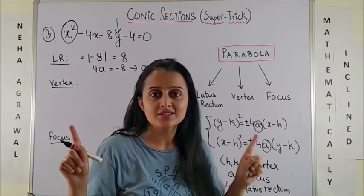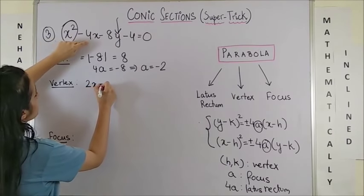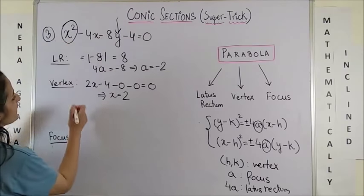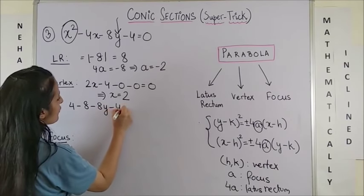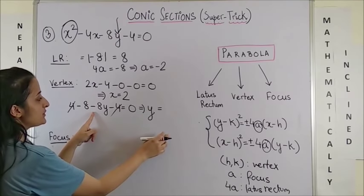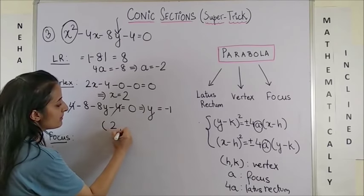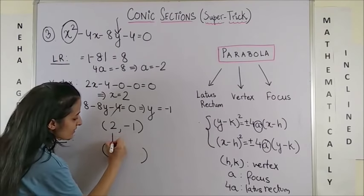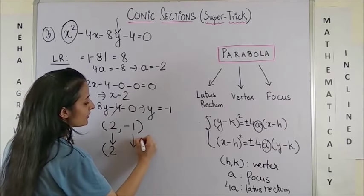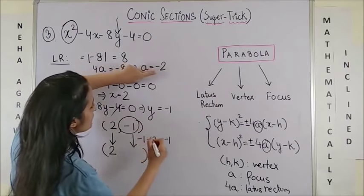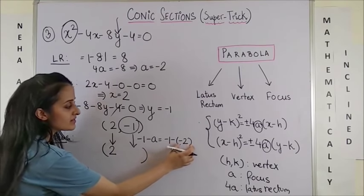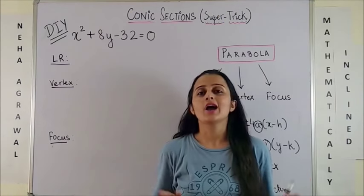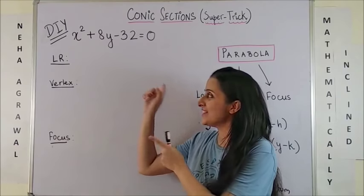For the vertex with x²: differentiate with respect to x treating y as a constant. This gives 2x − 4 = 0, so x = 2. Substitute x = 2 to get 4 − 8 − 8y − 4 = 0, giving −8y = 8, so y = −1. The vertex is (2, −1). For the focus: since it is x², the x-coordinate is copied as 2. For the y-coordinate, use vertex_y − a = −1 − (−2) = 1. So the focus is (2, 1).